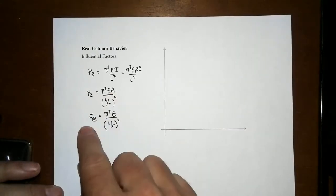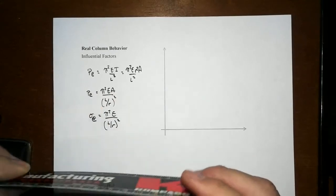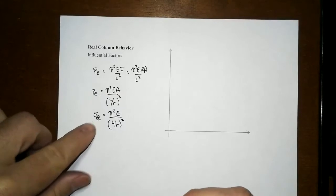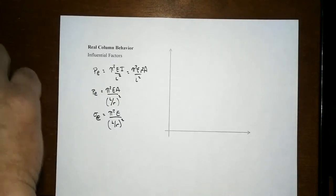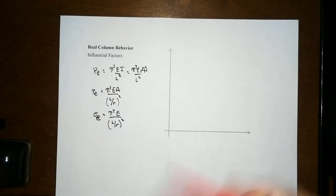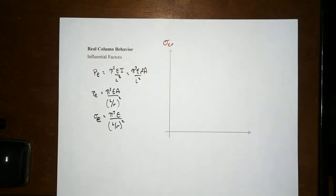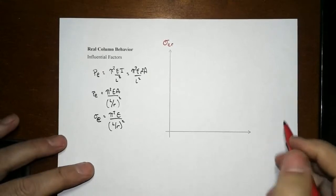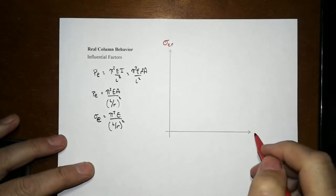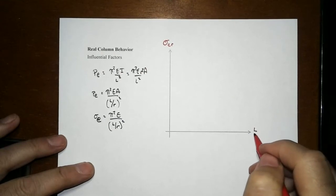If we also take that cross-sectional area and divide through, we get a stress as opposed to an overall force. That's convenient because we can think about the critical stress. We get rid of the cross-sectional area amount influence. It's the arrangement that matters.